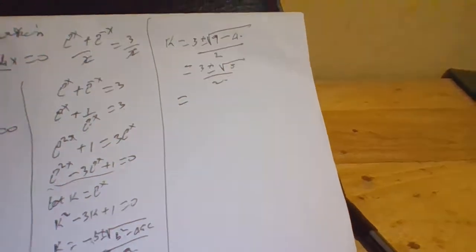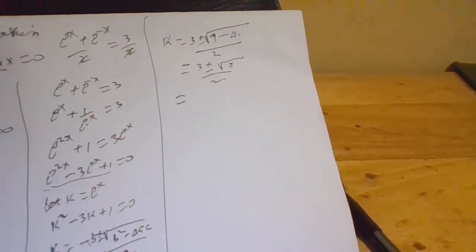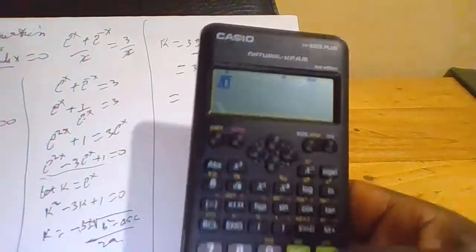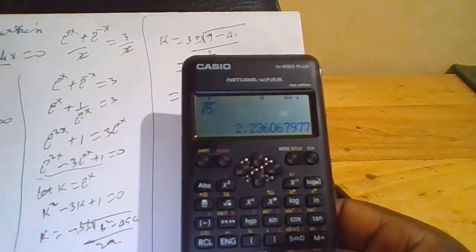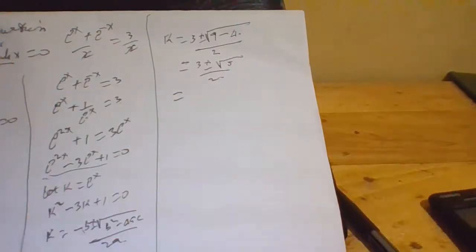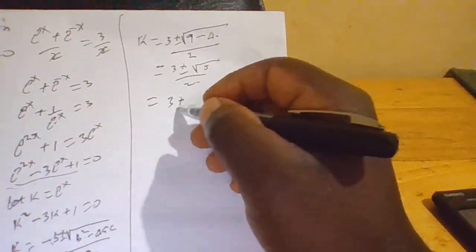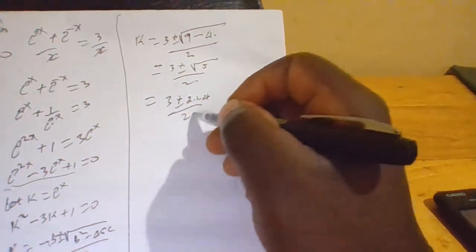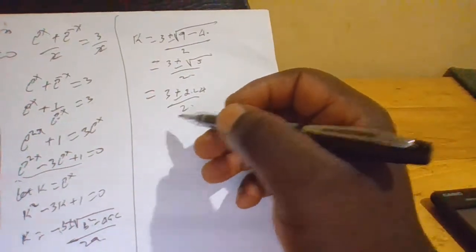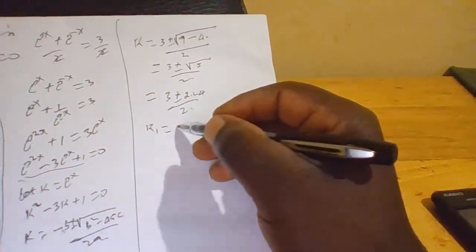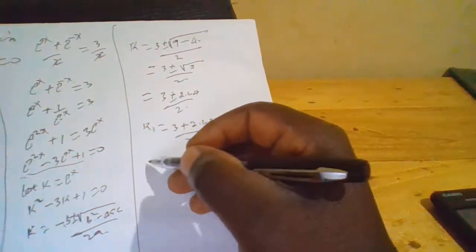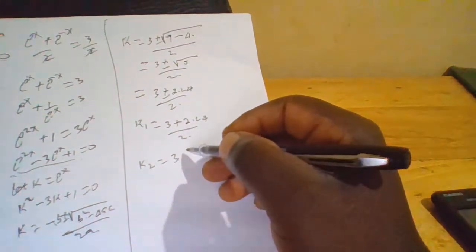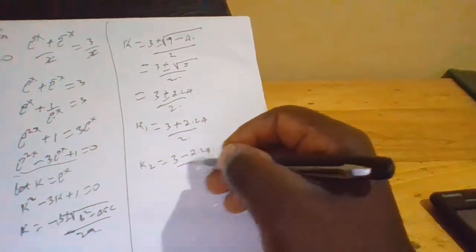The square root of 5 equals approximately 2.24. So this becomes 3 plus or minus 2.24, all over 2. Therefore k₁ equals 3 plus 2.24 over 2, and k₂ equals 3 minus 2.24 over 2.